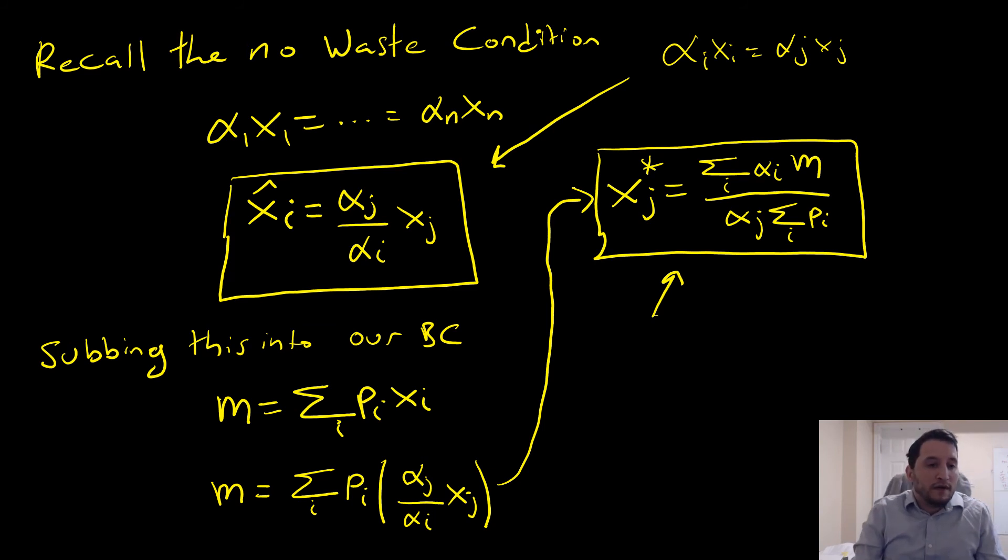So this is how you would solve for your Marshallian demands in the context of a Leontief, perfect complements case.